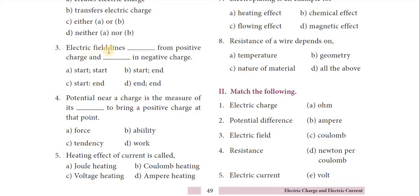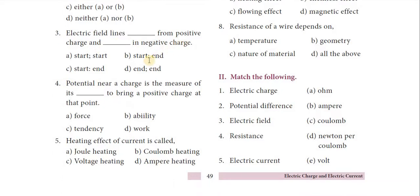Third question: electric field lines dash from positive charge and dash in negative charge. The answer: start from positive charge and end in negative charge. Both Option B and C are the same, so either Option B or C is correct.